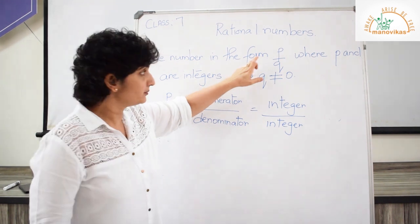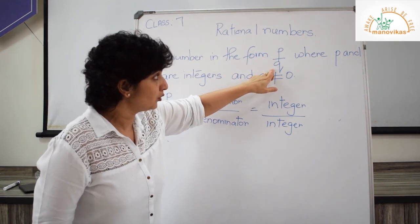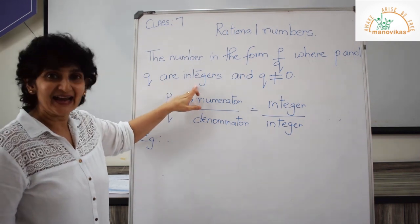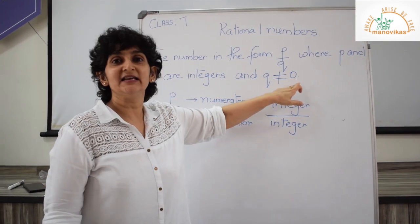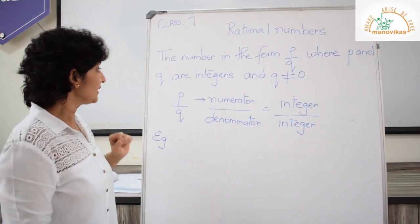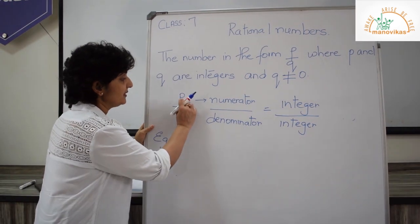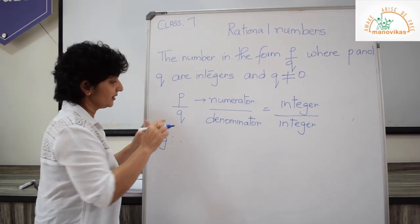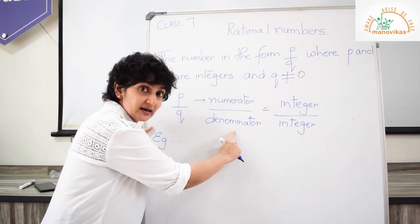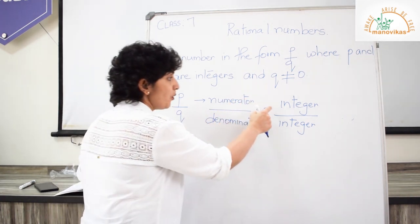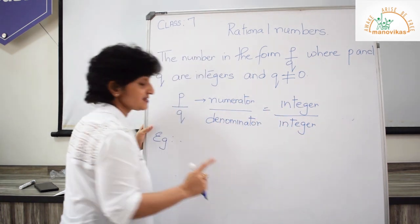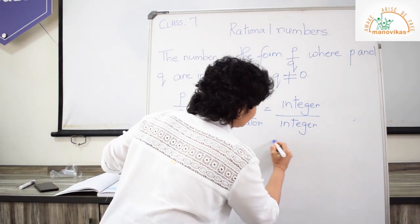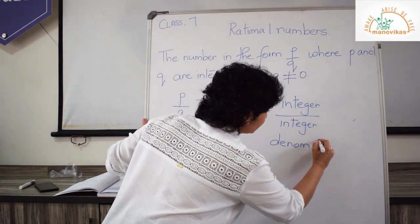A rational number is in the form P upon Q, where P and Q are integers and Q is not equal to 0. So our rational number is P upon Q, where P is your numerator and Q is your denominator. Both are integers, but remember the denominator should not be equal to 0.